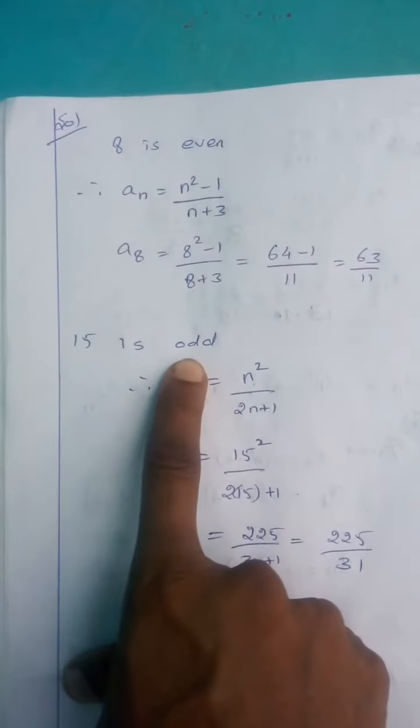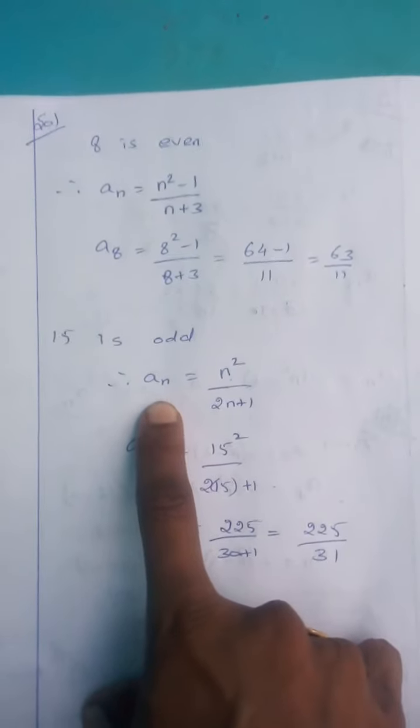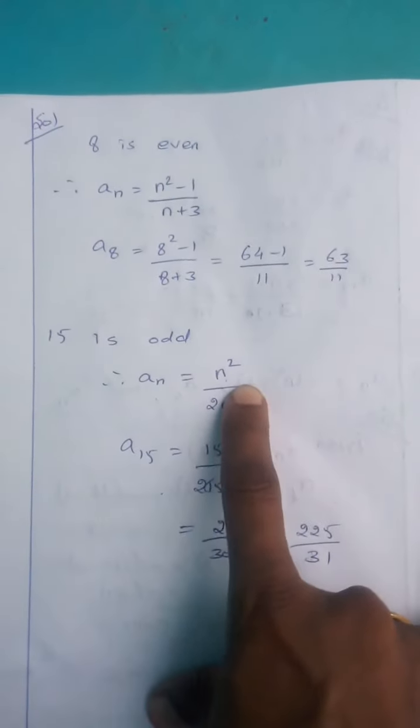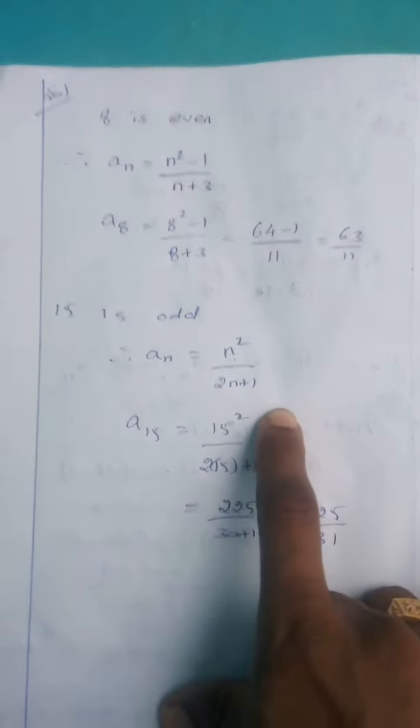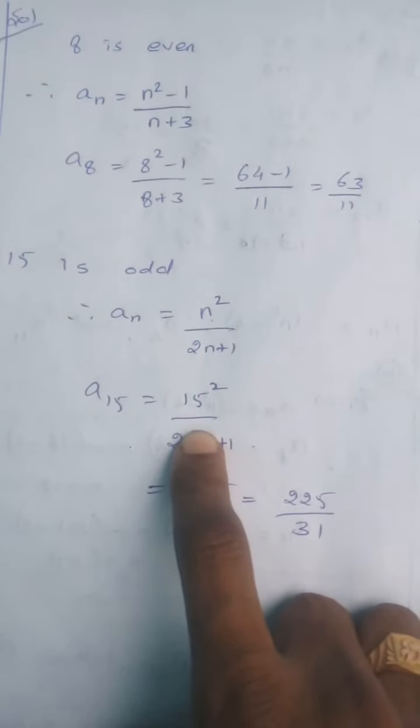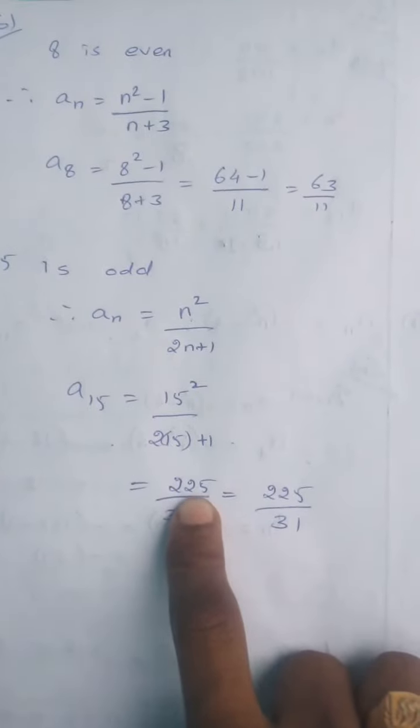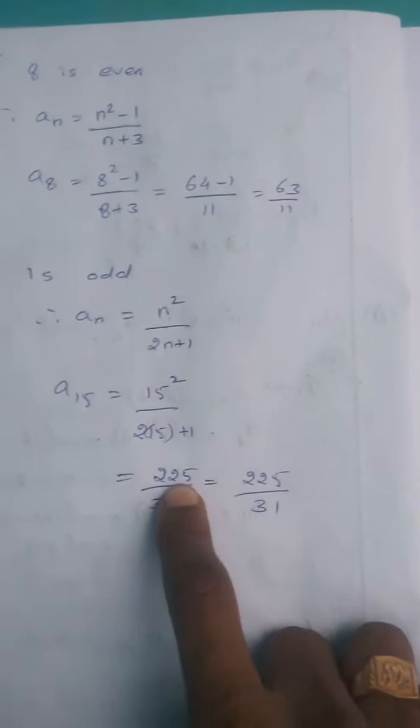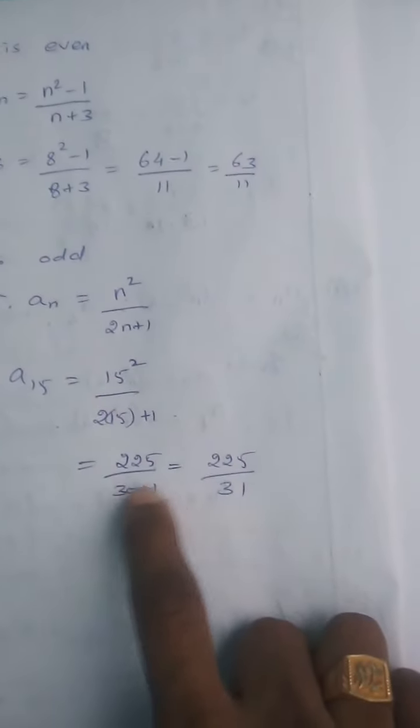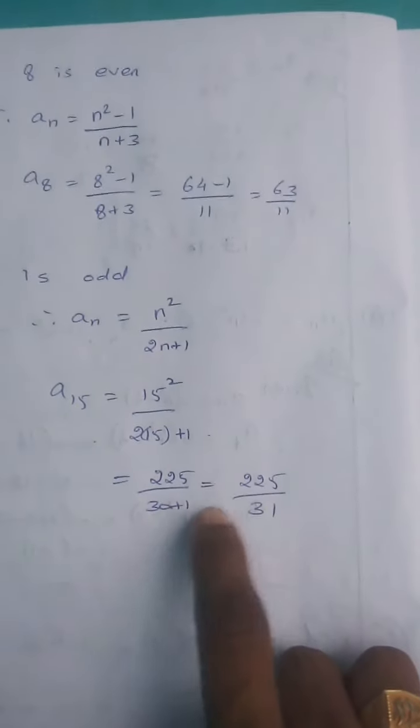Next, 15 is odd, so we use the second formula: AN equals n squared divided by 2n plus 1. So 15 squared divided by 2 times 15 plus 1. 15 times 15 is 225, divided by 2 times 15 is 30, plus 1 equals 31.